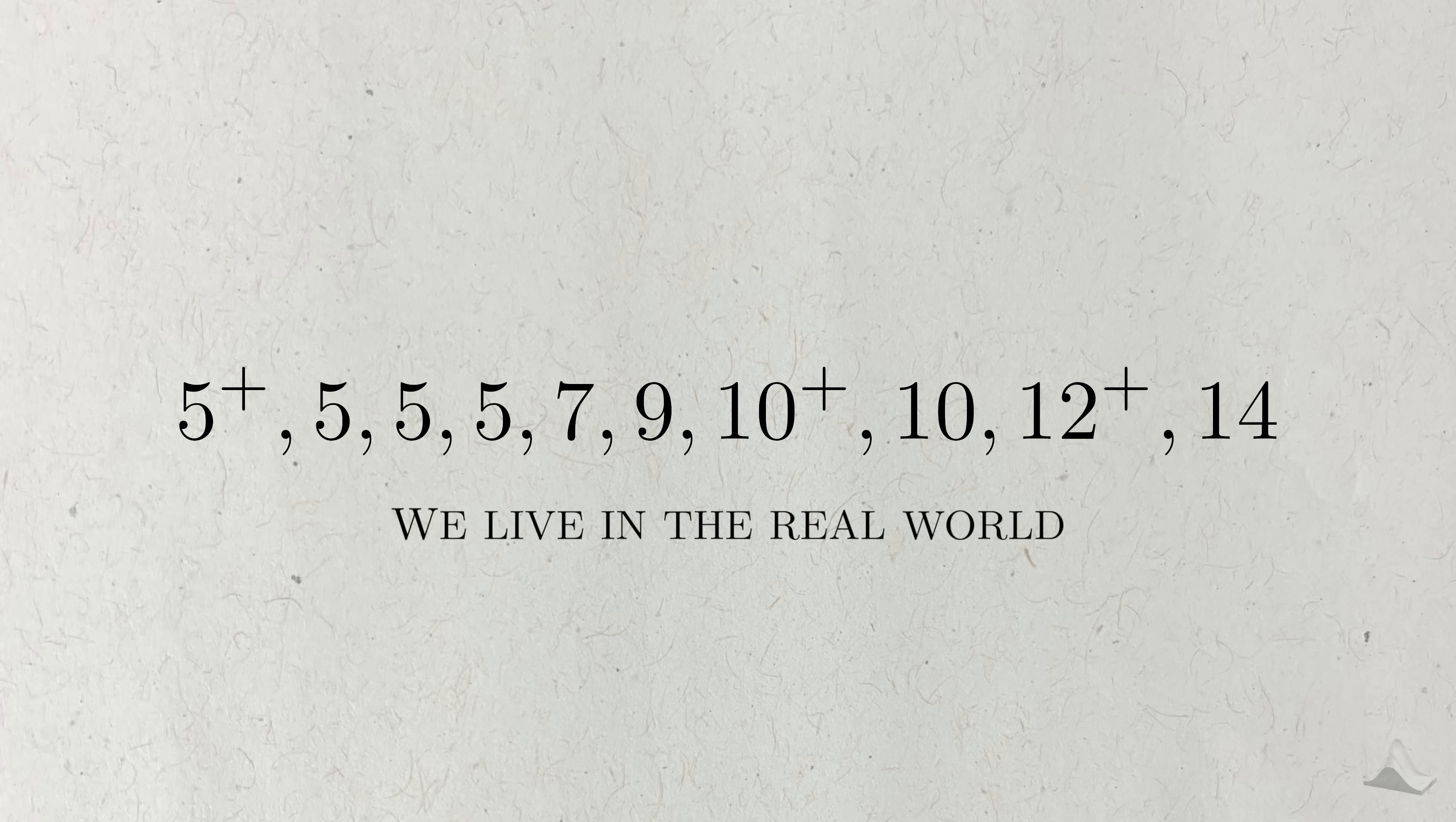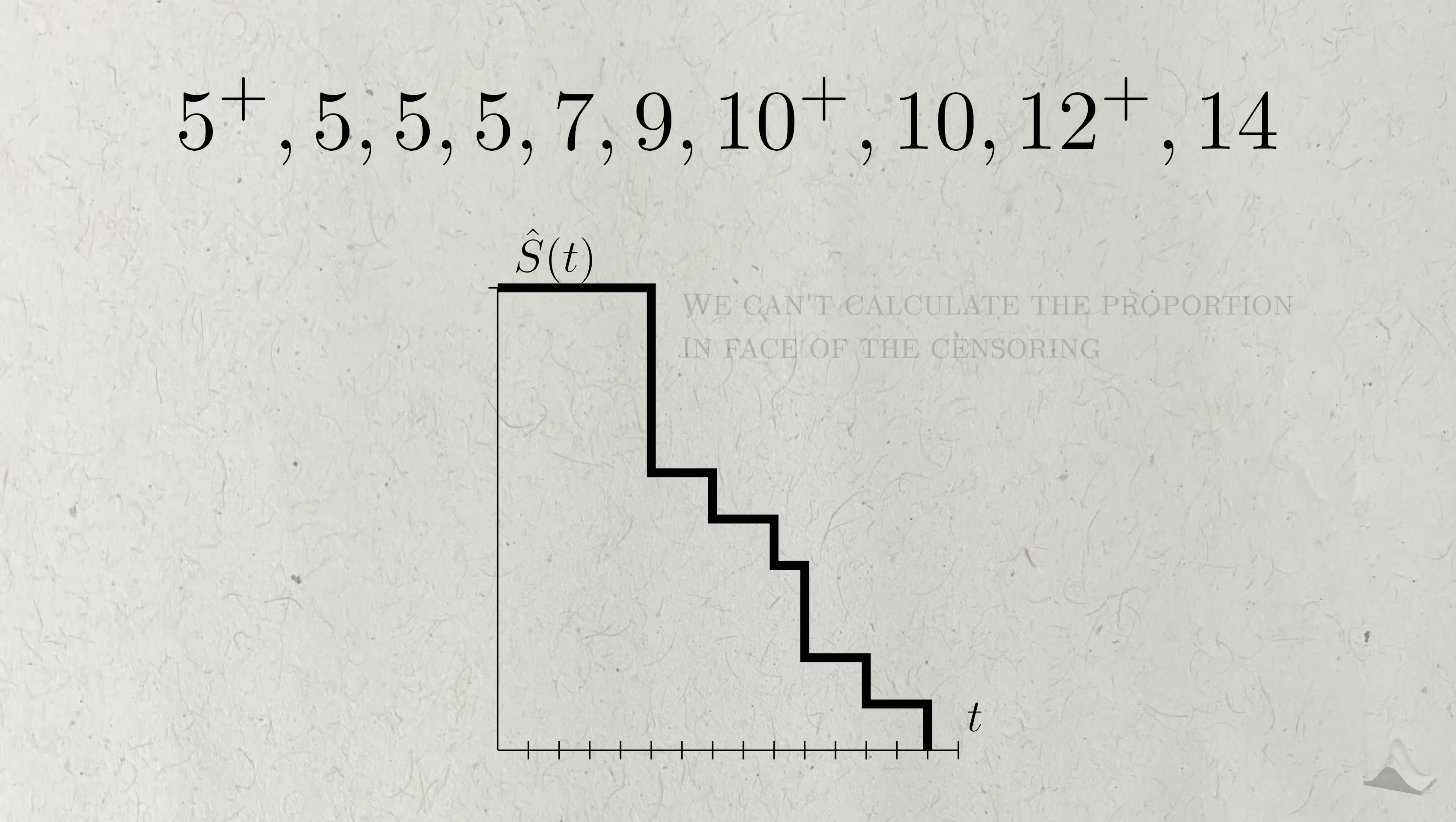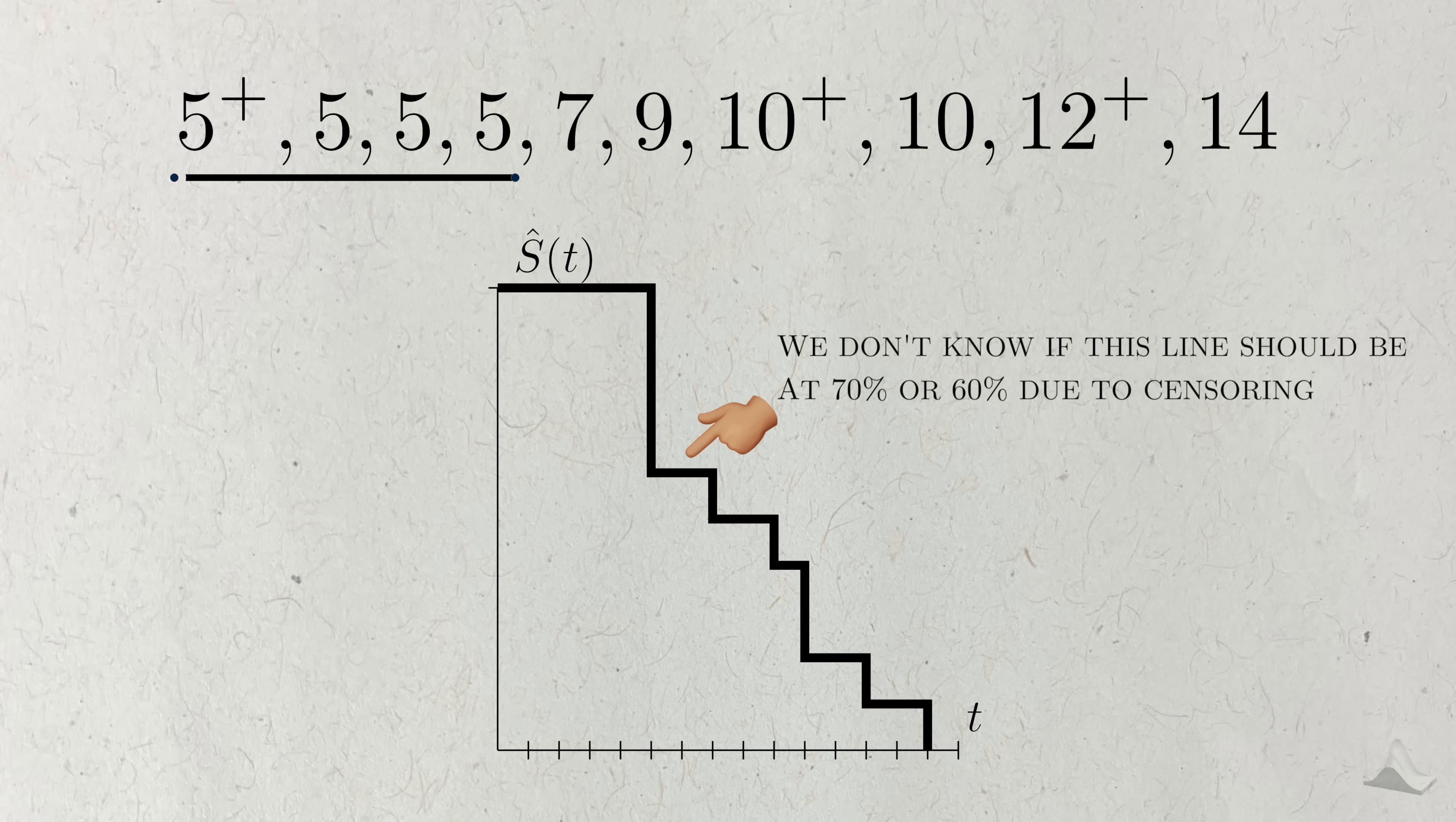But of course, we don't live in this fantasy world. We have to deal with the reality of censored data. Censored data screws up the empirical survival function because it makes it impossible to calculate the proportion at each time point. Take this example where 4 out of 10 people survive up to time 5, but one of them is censored. An event happens at day 7, but we don't know if the proportion is 4 or 3 out of 10 since we don't know what happened to this censored person at time 5.